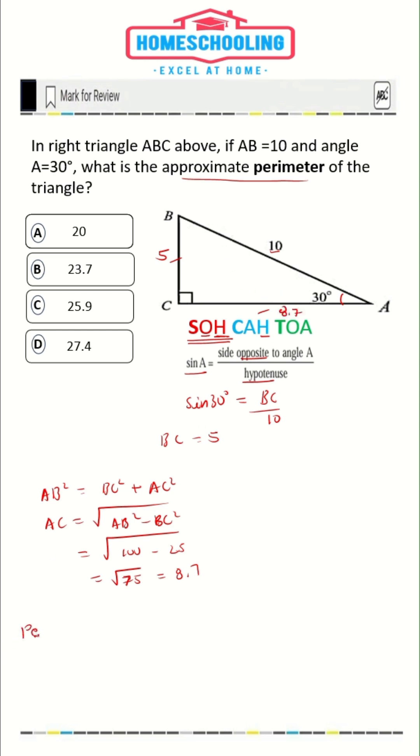To find the perimeter, we will add all three sides. 10 plus 5 is 15, and 15 plus 8.7 is 23.7. So option B is your correct answer.